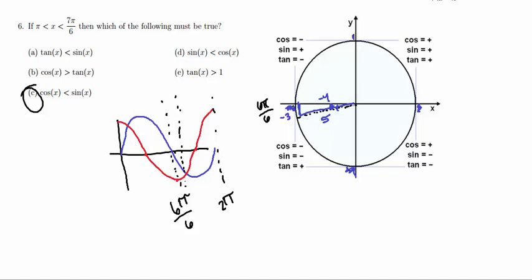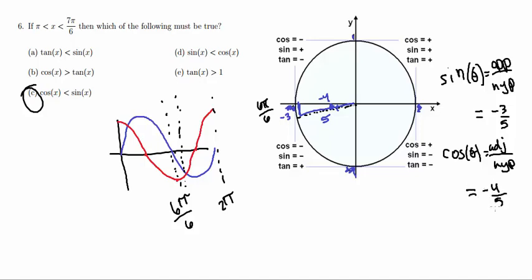So now let's see what the values of each of our functions give us. So if we take the sine of theta, that is equal to the opposite over the hypotenuse. So that is going to be equal to negative 3 over 5. And if we take the cosine of theta, that's equal to the adjacent over the hypotenuse. And that is equal to negative 4 over 5.